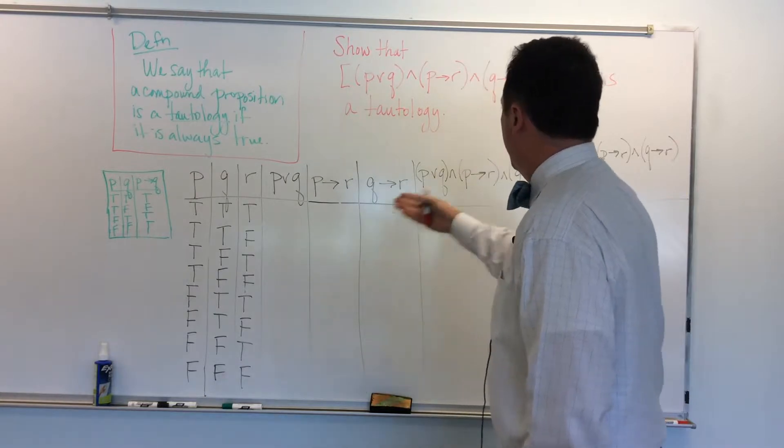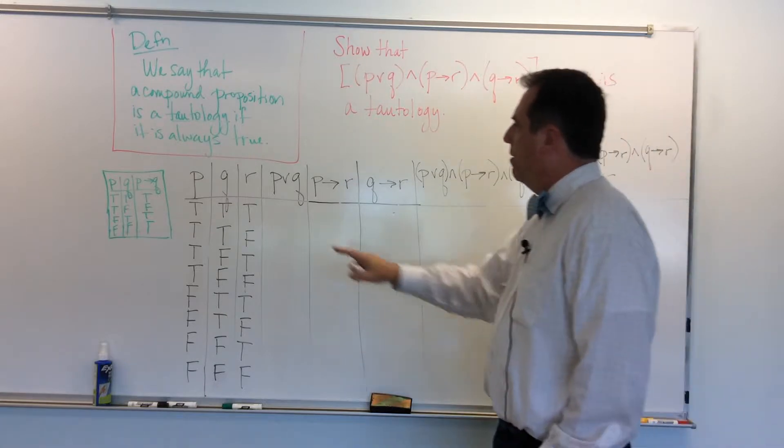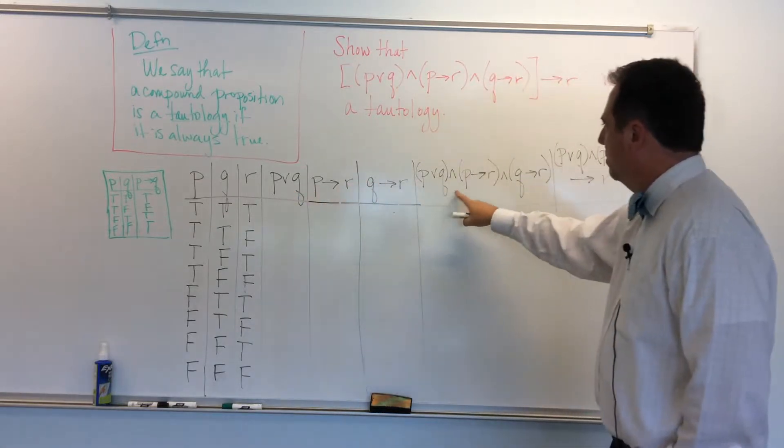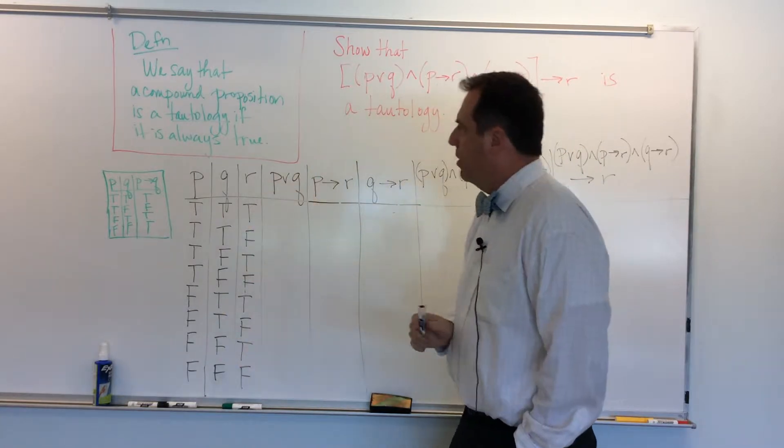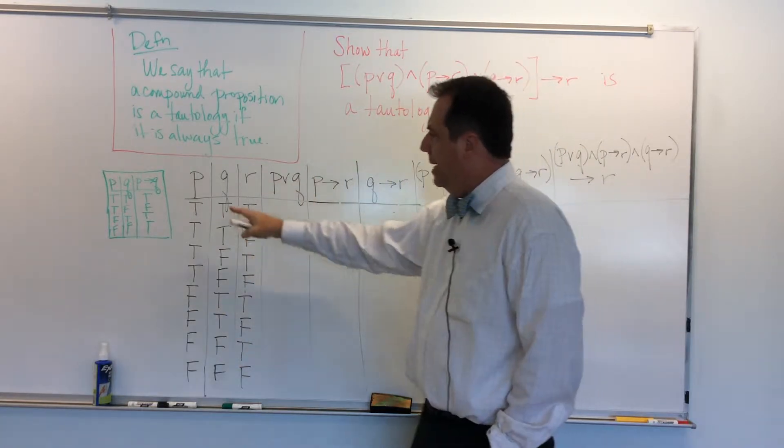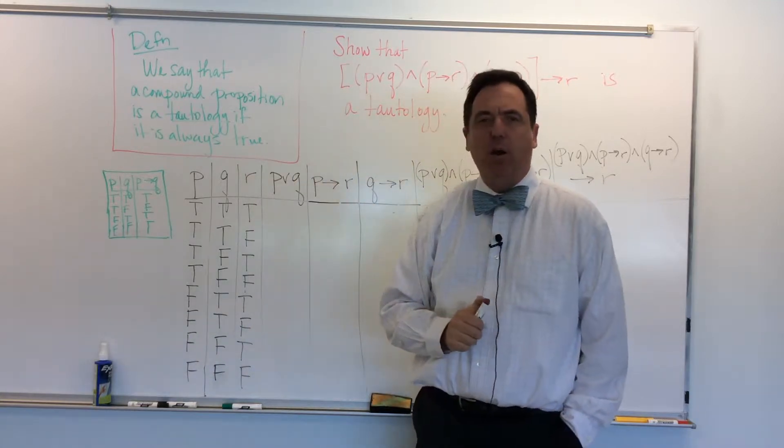Alright, so I have set up our truth table, and so I've broken it down to all its component parts. And I also, in the standard way, have written out all eight possible permutations of true and false for P, Q, and R.